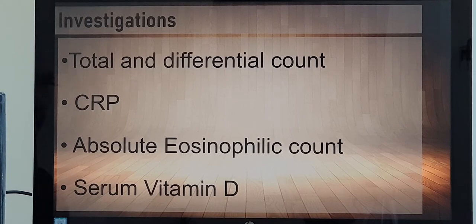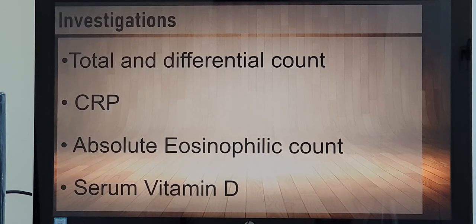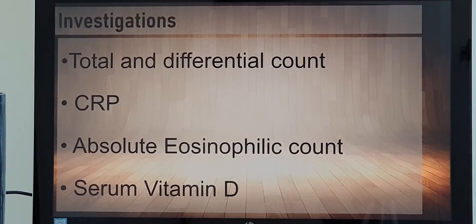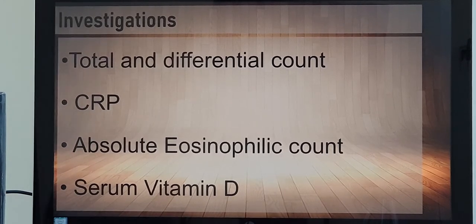Coming to investigations: when you do a total count and differential count, the eosinophil count will be high, which indicates allergy. If there is bacterial infection, C-reactive protein or procalcitonin levels will be elevated. For allergy-specific testing, the absolute eosinophilic count comes around 350 to 400 — these levels will be increased. If you do a serum vitamin D assay and the value is low, the allergic symptoms will be more, and we need to supplement vitamin D to help control the allergy.